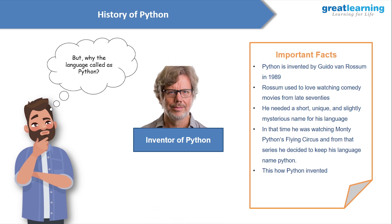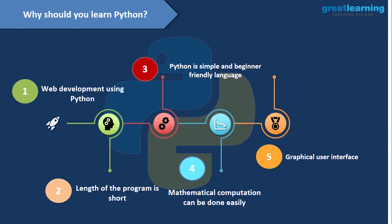The history of Python: the inventor is Guido van Rossum, who created Python in 1989. Rossum loved watching comedy movies from the late seventies and needed a short, unique, and slightly mysterious name for his language. At that time, he was watching Monty Python's Flying Circus, and from that he decided to use the name Python for his language. This is how Python came into the picture.